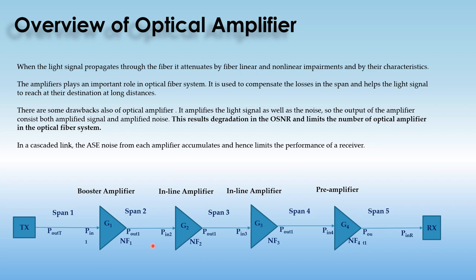The noise from G1, G2, G3, and all the optical amplifiers used in the cascaded system accumulates and reaches the receiver, and hence the OSNR value of the complete link is degraded and the number of usable optical amplifiers is also limited.